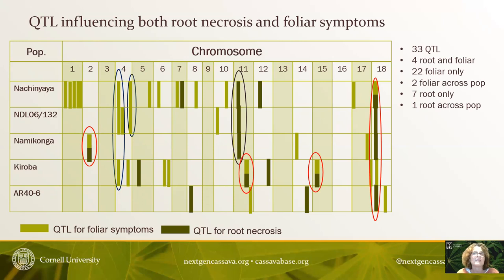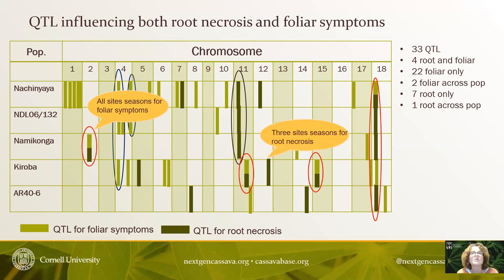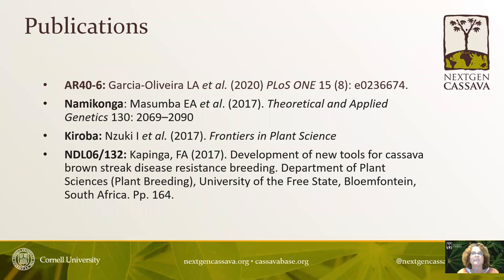In Natchinyaya and NDL 06132, which are full or half siblings, you would expect more consistency across populations, and this is what we observe. The QTL on chromosome 2 in Namikonga for foliar symptoms is particularly interesting as it occurred in all sites and seasons, and chromosome 12 in Kiroba for root necrosis occurred in three sites or seasons. Results from four of these five populations have been published.